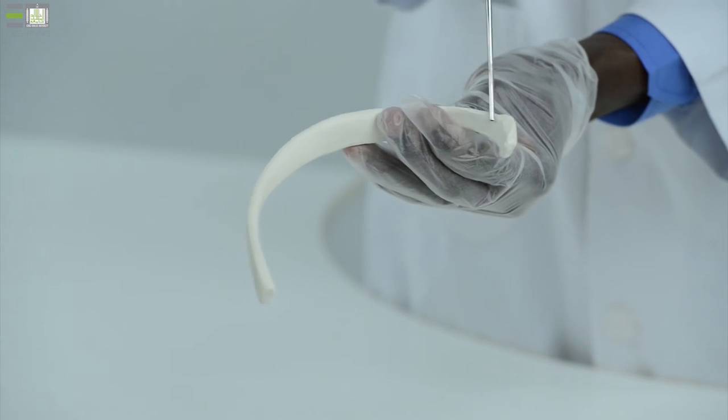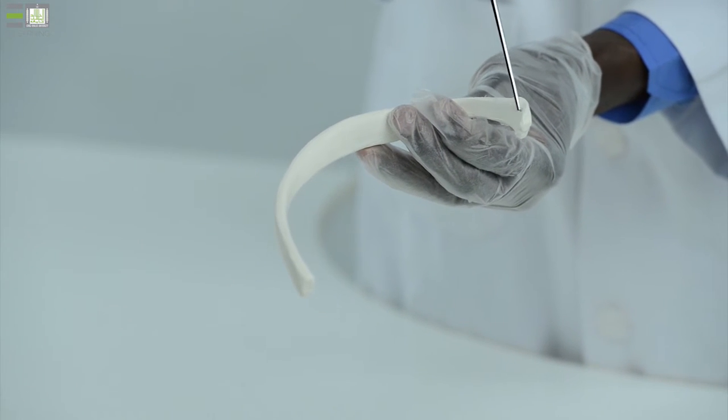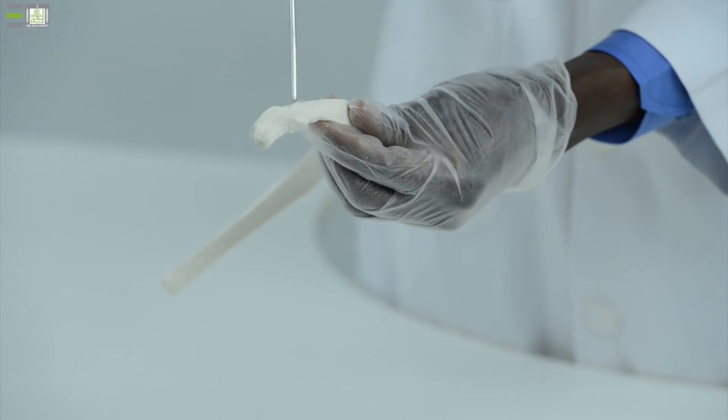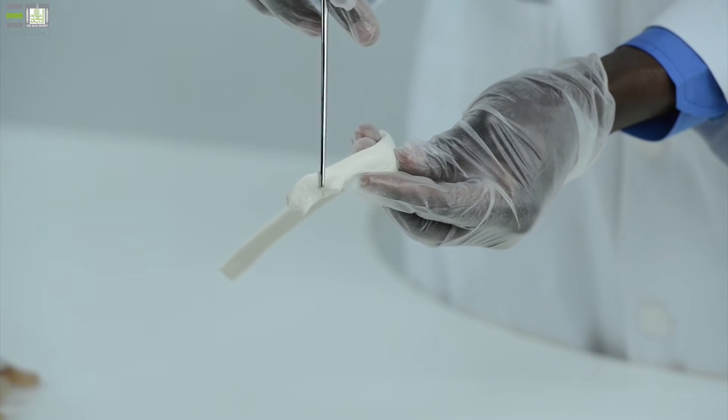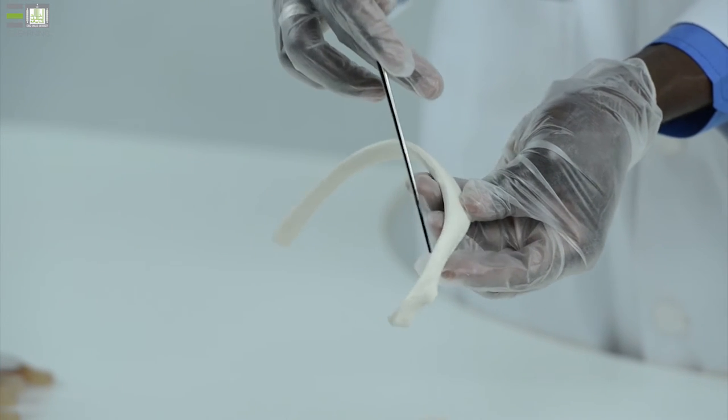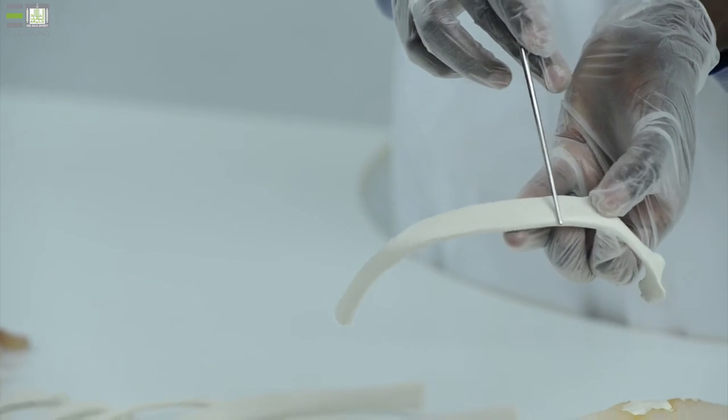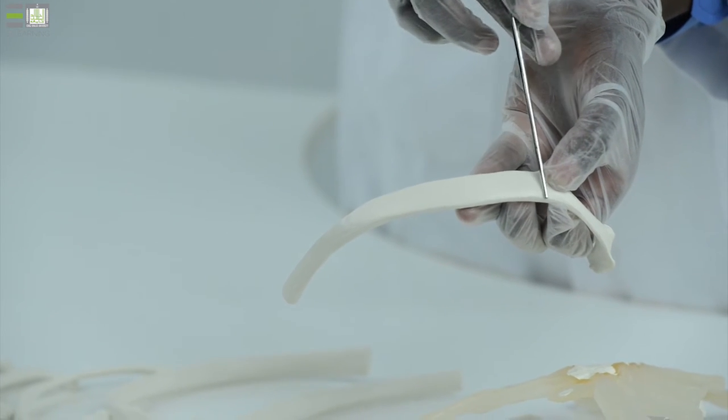And this constricted part, distal to the head, is called neck. And this rough projected part is called tubercle. And the remaining part is called shaft, the shaft of the rib.